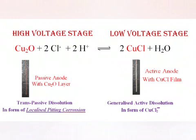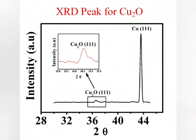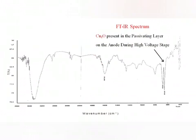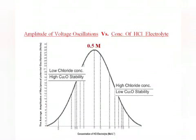During high voltage state, the anodic surface is found to be coated with red and passivating cuprous oxide layer, while during the low voltage state, the anode is observed to be coated with white and porous cuprous chloride. The presence of copper oxide as the fundamental cause of these voltage oscillations is also confirmed by X-ray diffraction technique, as well as by Fourier transform infrared spectroscopy.